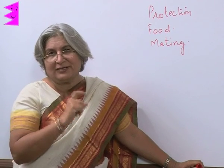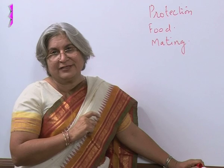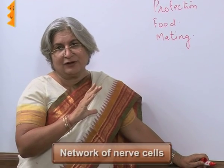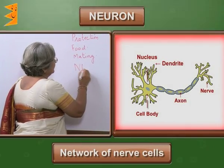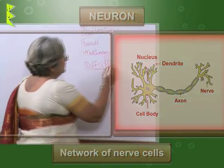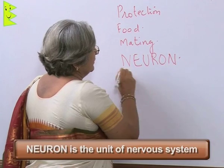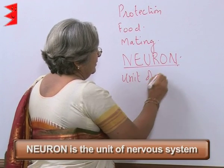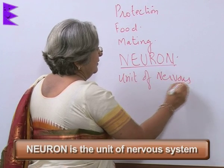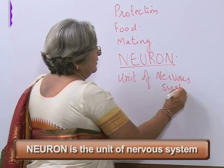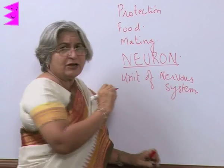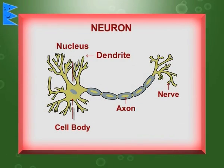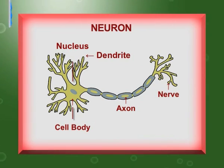There is a special type of tissue — the nervous tissue, which is made up of a network of nerve cells which are also called neurons, the unit of the nervous system. The structure of a neuron is very interesting; it is made in such a way that it can pick stimuli.